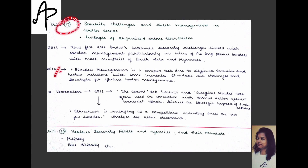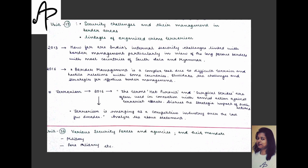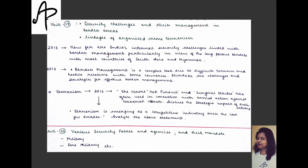The second-last security unit covers security challenges and their management in border areas, and linkages of organized crime with terrorism. An example question: 'How far are India's internal security challenges linked with border management?' — this is almost directly lifted from the syllabus.